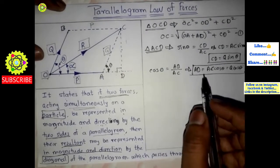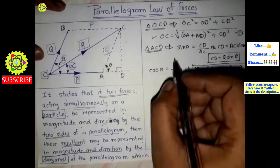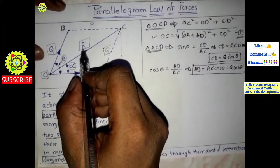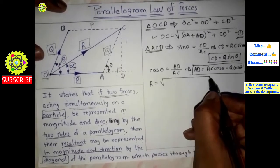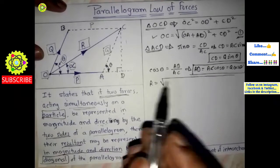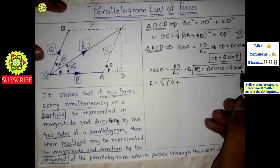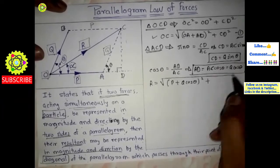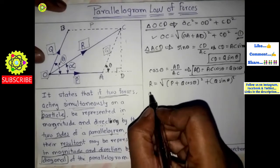Now we put all the available values into equation one. OC is our resultant R. OA is P, and AD is Q cos theta, and CD is Q sin theta. So R equals the square root of (P + Q cos theta)² + (Q sin theta)².